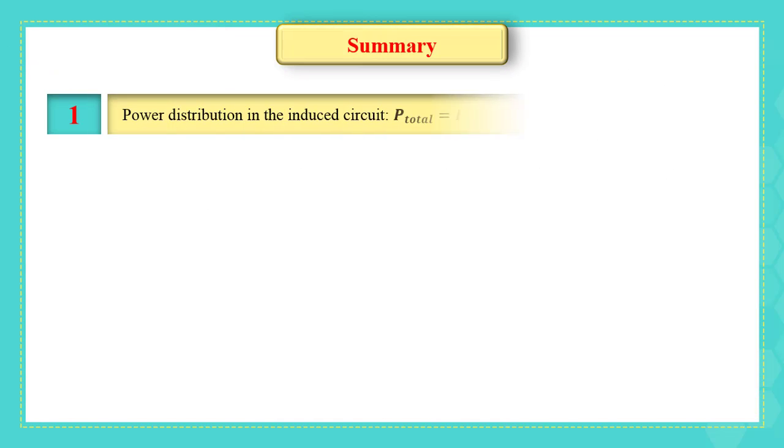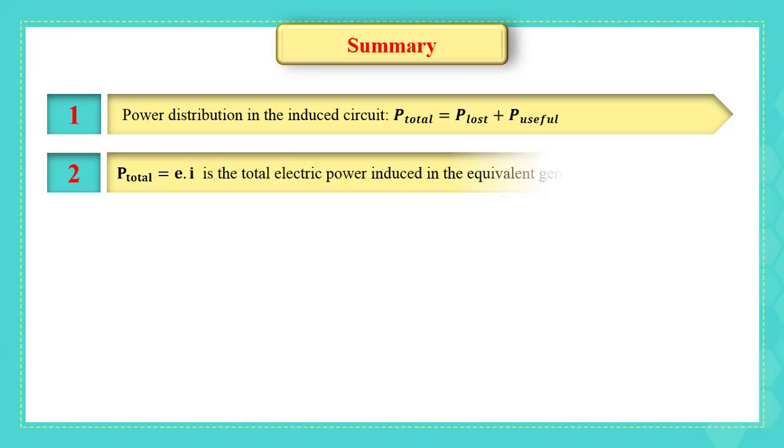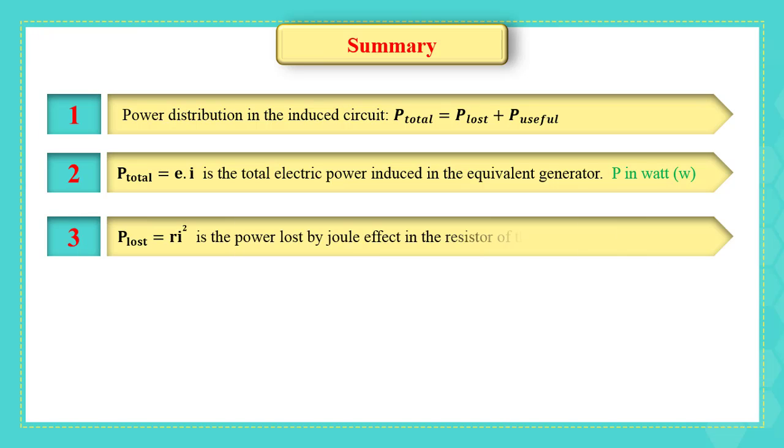Summary. 1. Power distribution in the induced circuit: P total equals P lost plus P useful. 2. P total equals E multiplied by I is the total electric power induced in the equivalent generator, P in watt. 3. P lost equals R I squared is the power lost by Joule effect in the resistor of the coil.